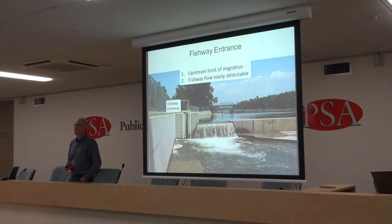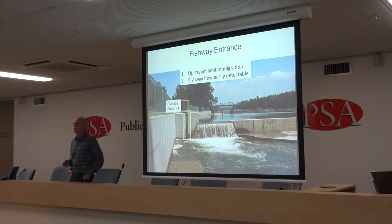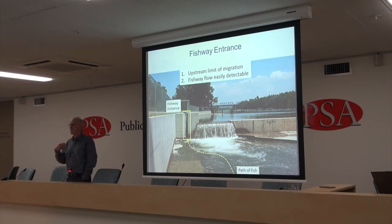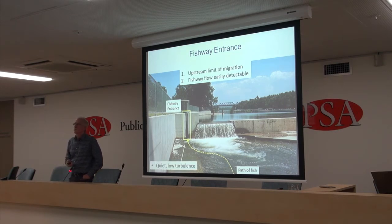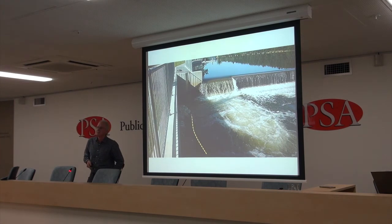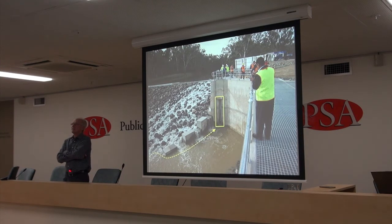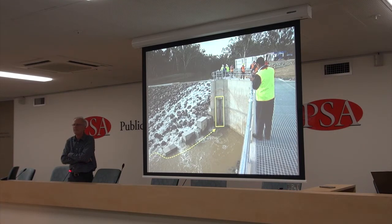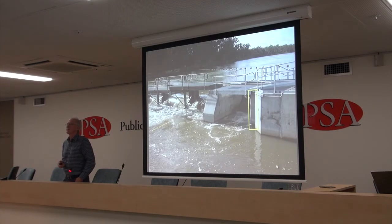This is Penrith Weir. You can see it's notched beside the fishway entrance — the fishway entrance is in the yellow box. The path of fish is shown: they're attracted by the high flow, they move right up against that flow, and there's the entrance. It's in a quiet, low-turbulence area. And that's the same principle applied at the next site — a design by Heath Robertson at Jelligo — where you can see how fish will move their way up to that entrance.